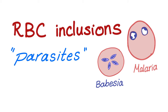Hey, this is Medicosis Perfectionalis. Welcome to my series on Hematology and Oncology. We have been talking about red blood cells for a while, and we have discussed the poikilocytes, or the abnormally shaped red blood cells.